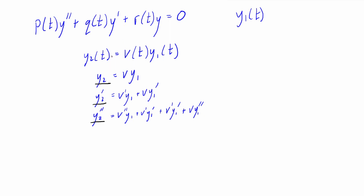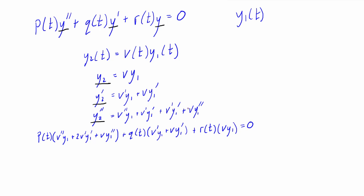Now we have y2, y2 prime, and y2 double prime. We plug these back into the original differential equation — y2 goes where y goes, y2 prime where y prime goes, and y2 double prime where the double prime is. Providing you've done the math correctly, the terms that have the plain v's in them will drop out. If they don't drop out, you've done something wrong. You'll then be left with just a function of v double primes and v primes.